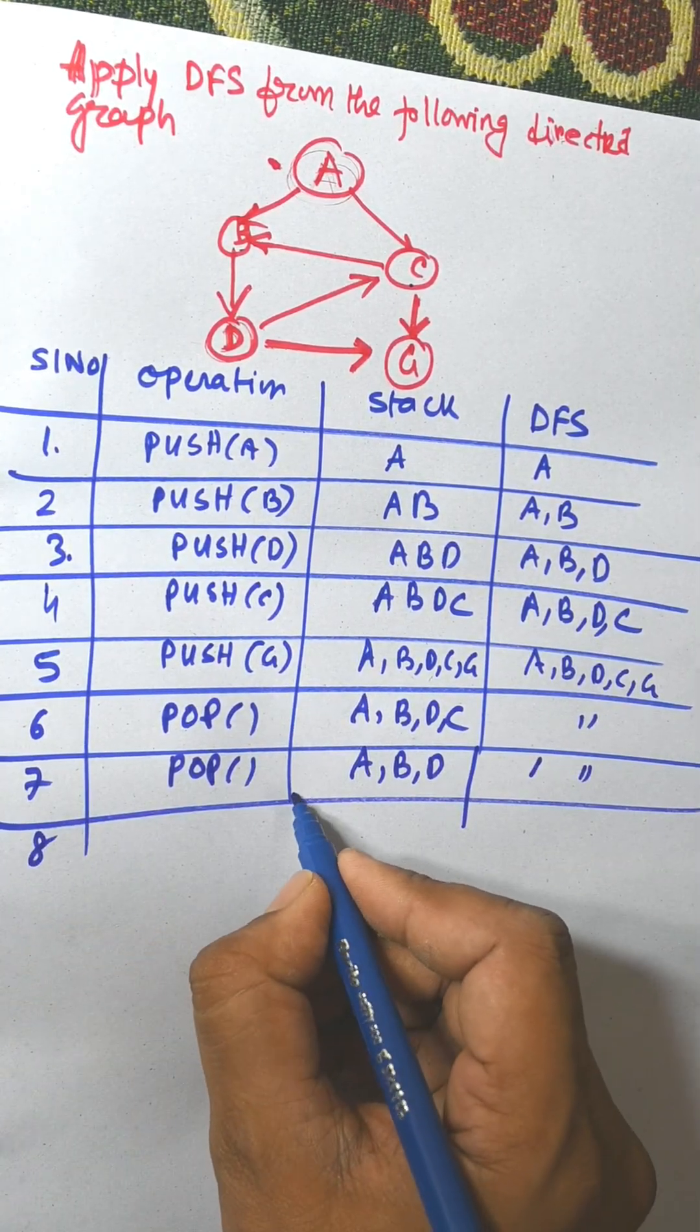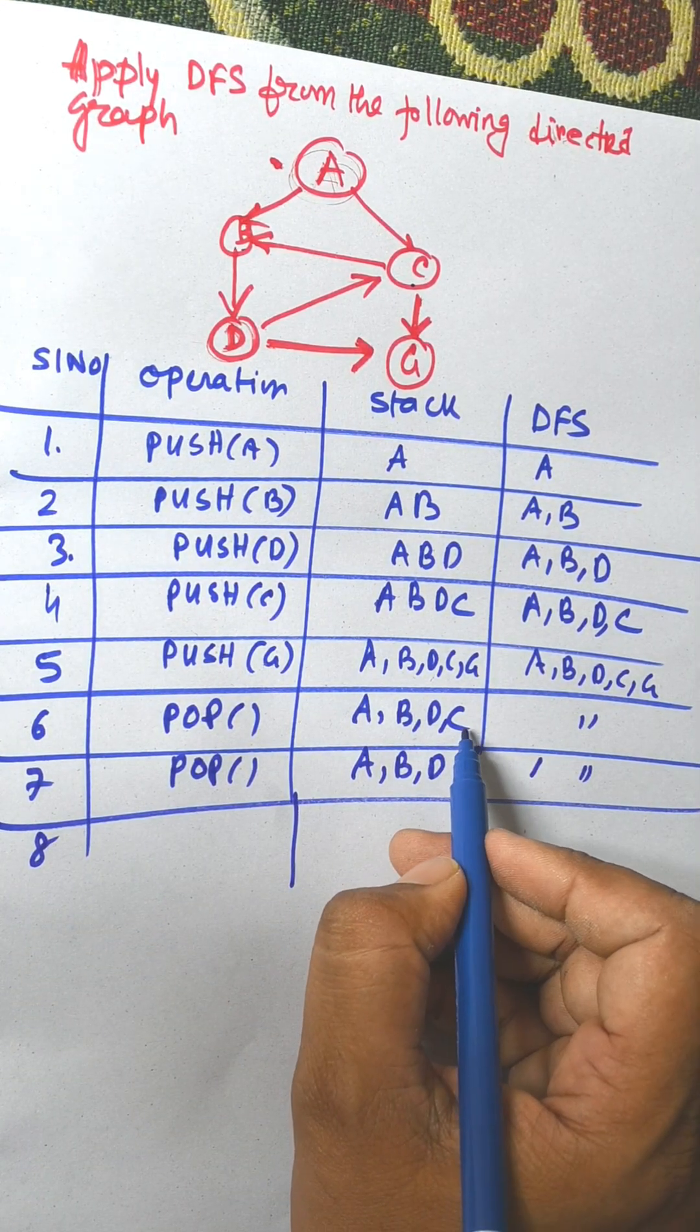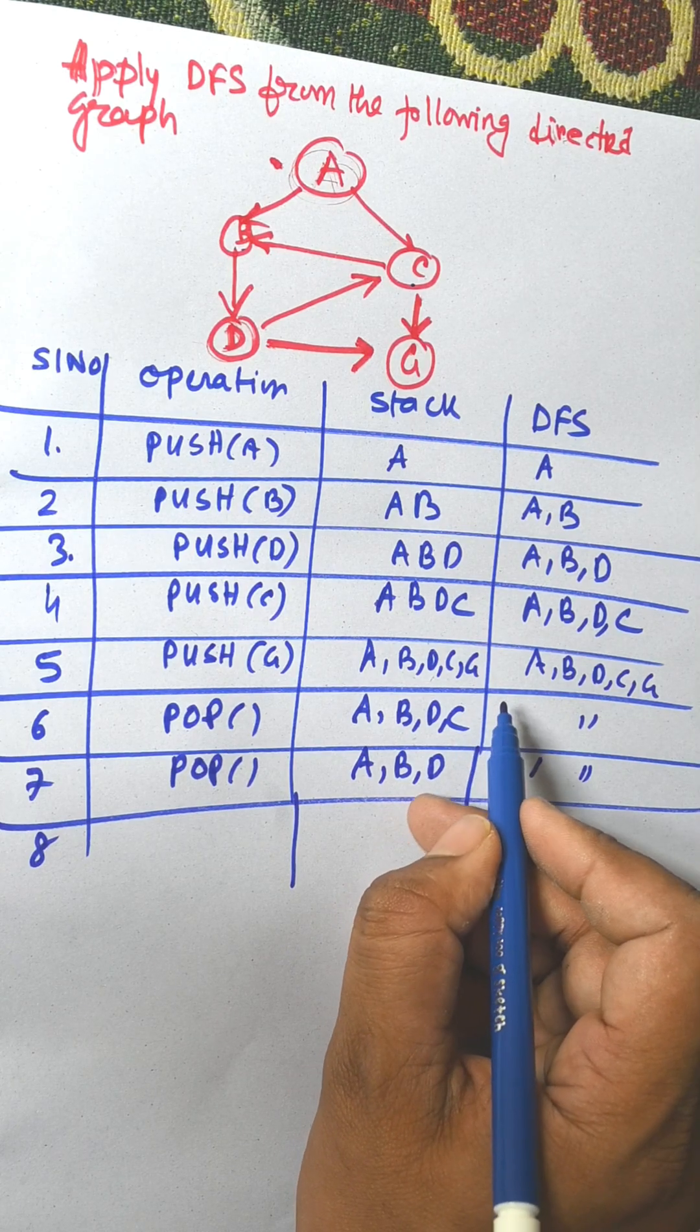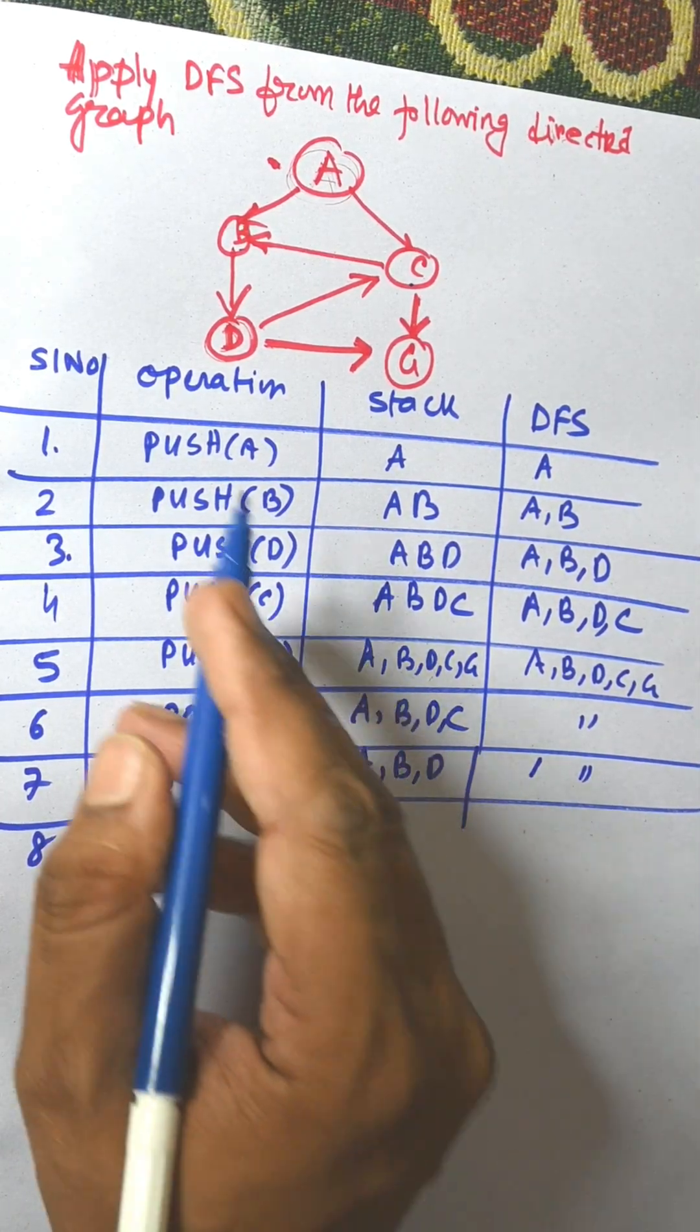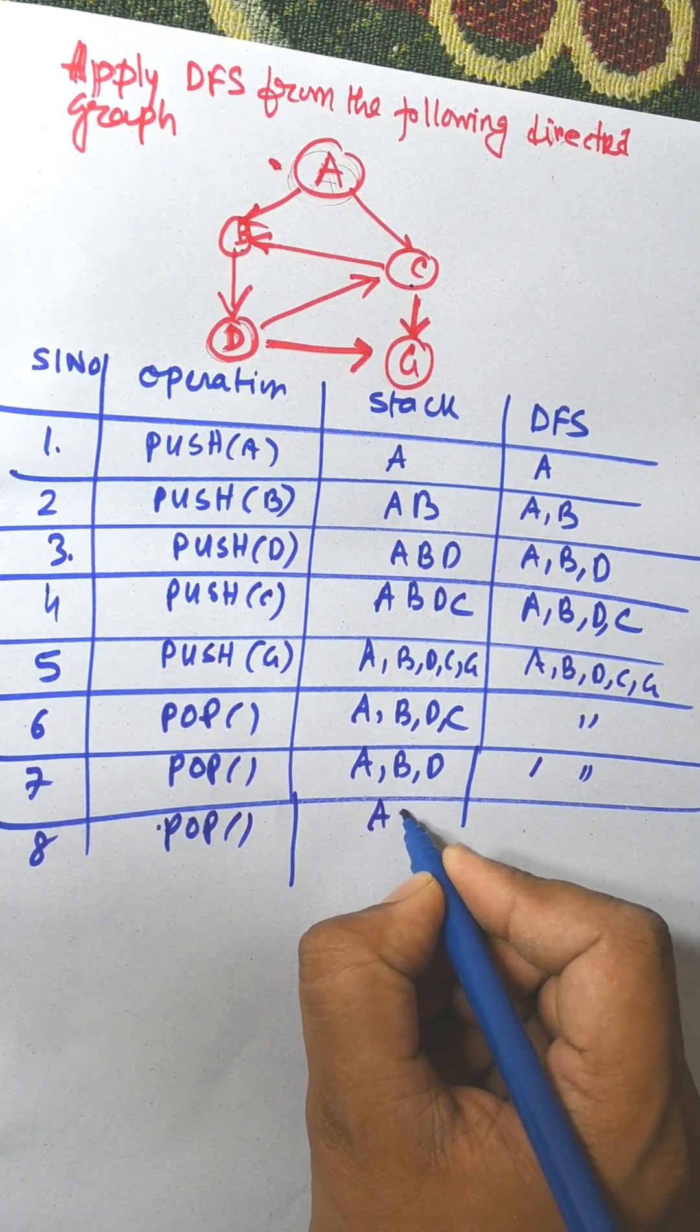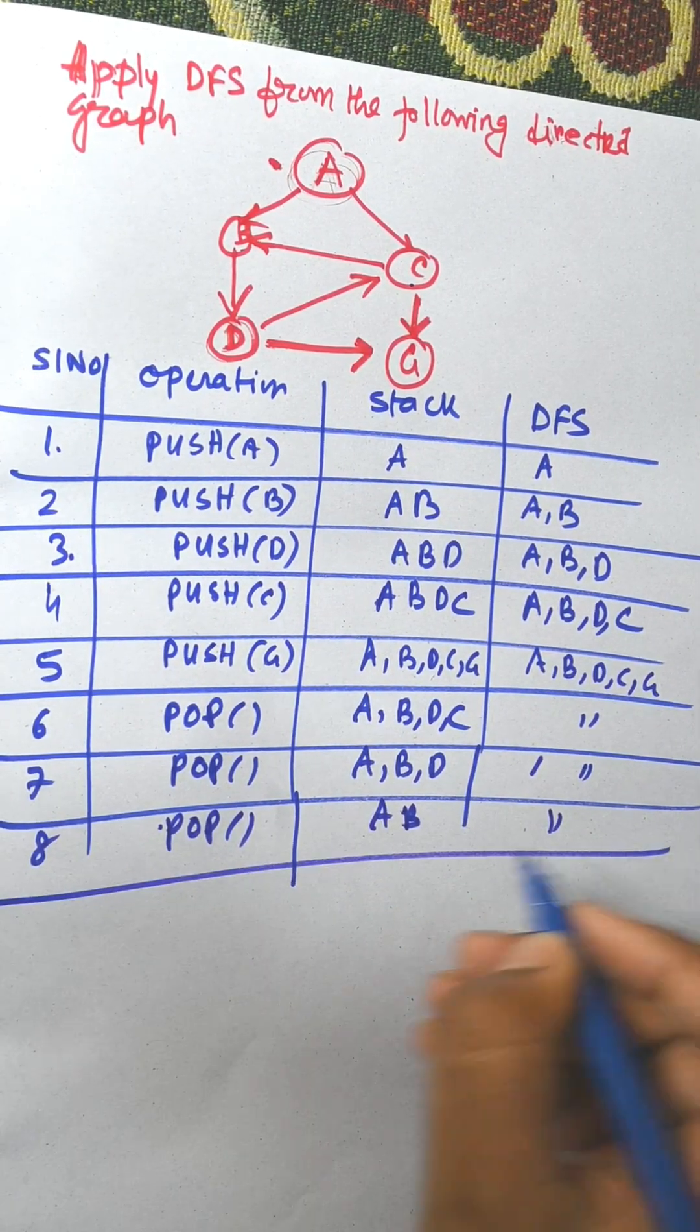From D, already all are visited. That is popped. Stack is A B. Answer remains the same. From B.